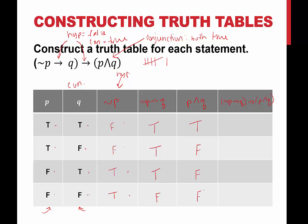Then to finish this off, the entire statement put together. This is now the hypothesis, and here is our conclusion. We're looking for either a false hypothesis or a true conclusion or both. We have true implies true — the conditional statement is true. True implies false — that's a false. True implies false — also a false. False implies anything — that's a true conditional. And this would be our truth table.